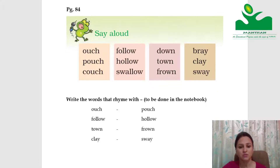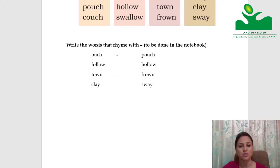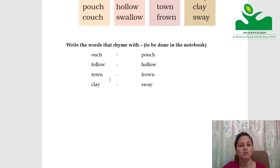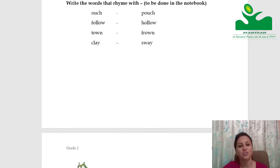Based on these, we can find rhyming words. You can do this exercise in the notebook. Words that rhyme with out — you can write pouch, hollow, or swallow. Any other rhyming word is also fine. Words rhyming with down: brown. Words rhyming with play: sway or clay.